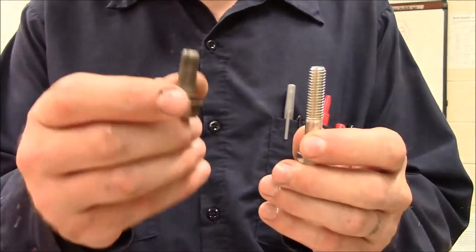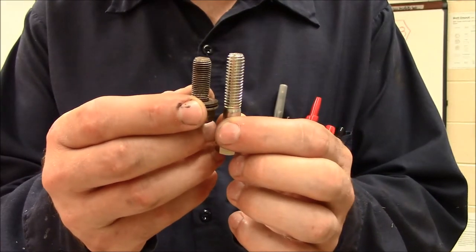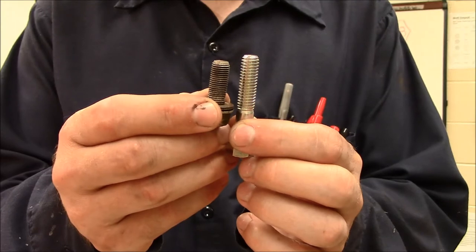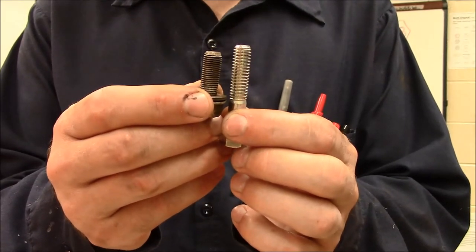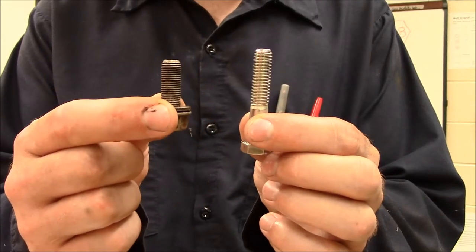So both of these bolts are 3/8 bolts. But you'll notice that the thread spacing on them is different. So even though they're both 3/8 bolts, one of these bolts is coarse, the threads are further apart, and one of these bolts is fine.